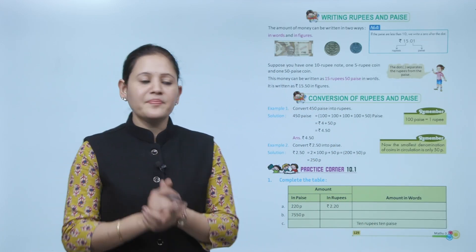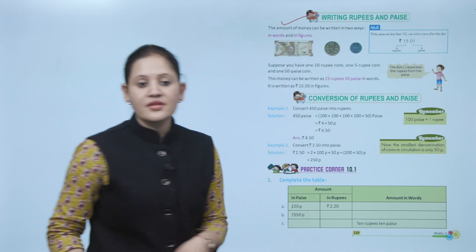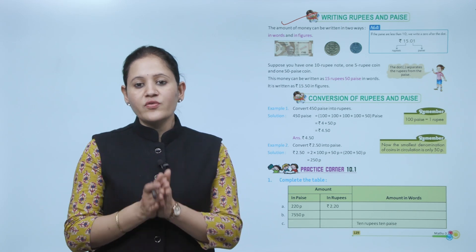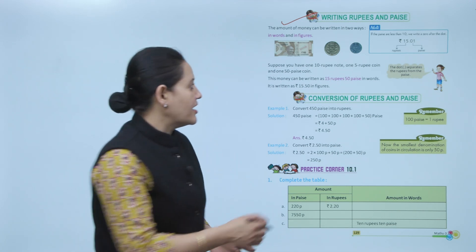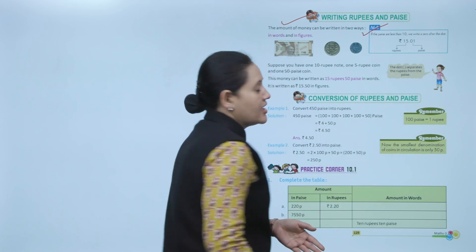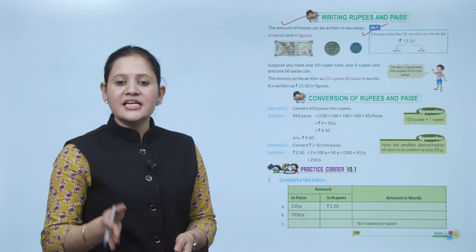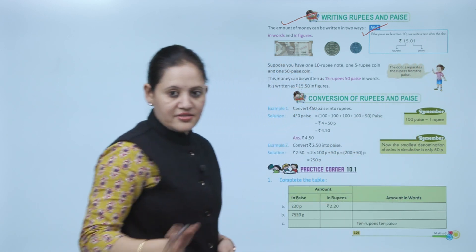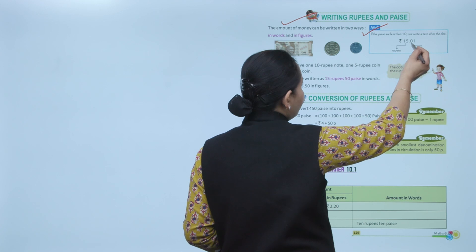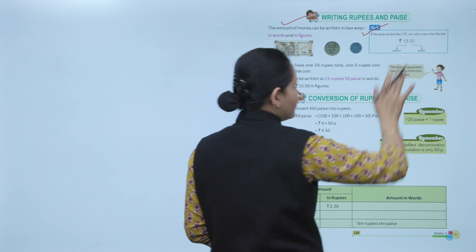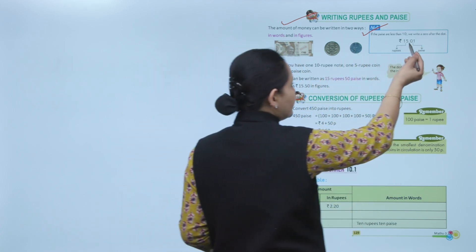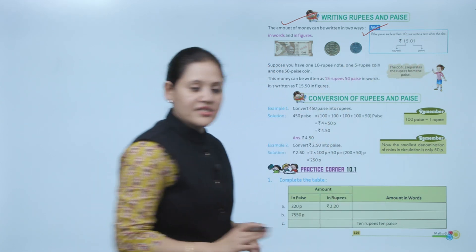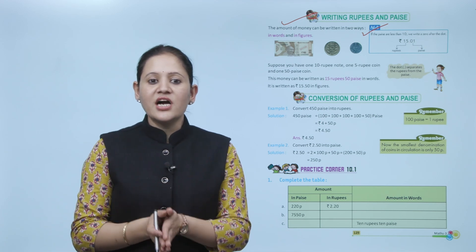Next: writing rupees and paisa. The amount of money can be written in two ways. If paisa is less than 10, we'll write a zero after the dot. So, point zero and then whatever paisa is there we'll write. Before the decimal we'll write the rupees — in words and in figures.